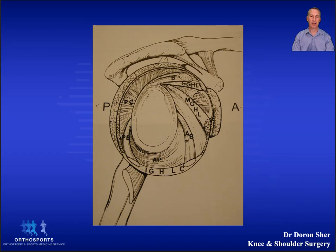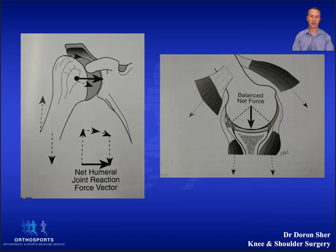The native glenoid is somewhat retroverted and the risk of anterior instability increases with greater anteversion. The soft tissue stabilizers of the glenohumeral joint can be divided into static and dynamic stabilizers.